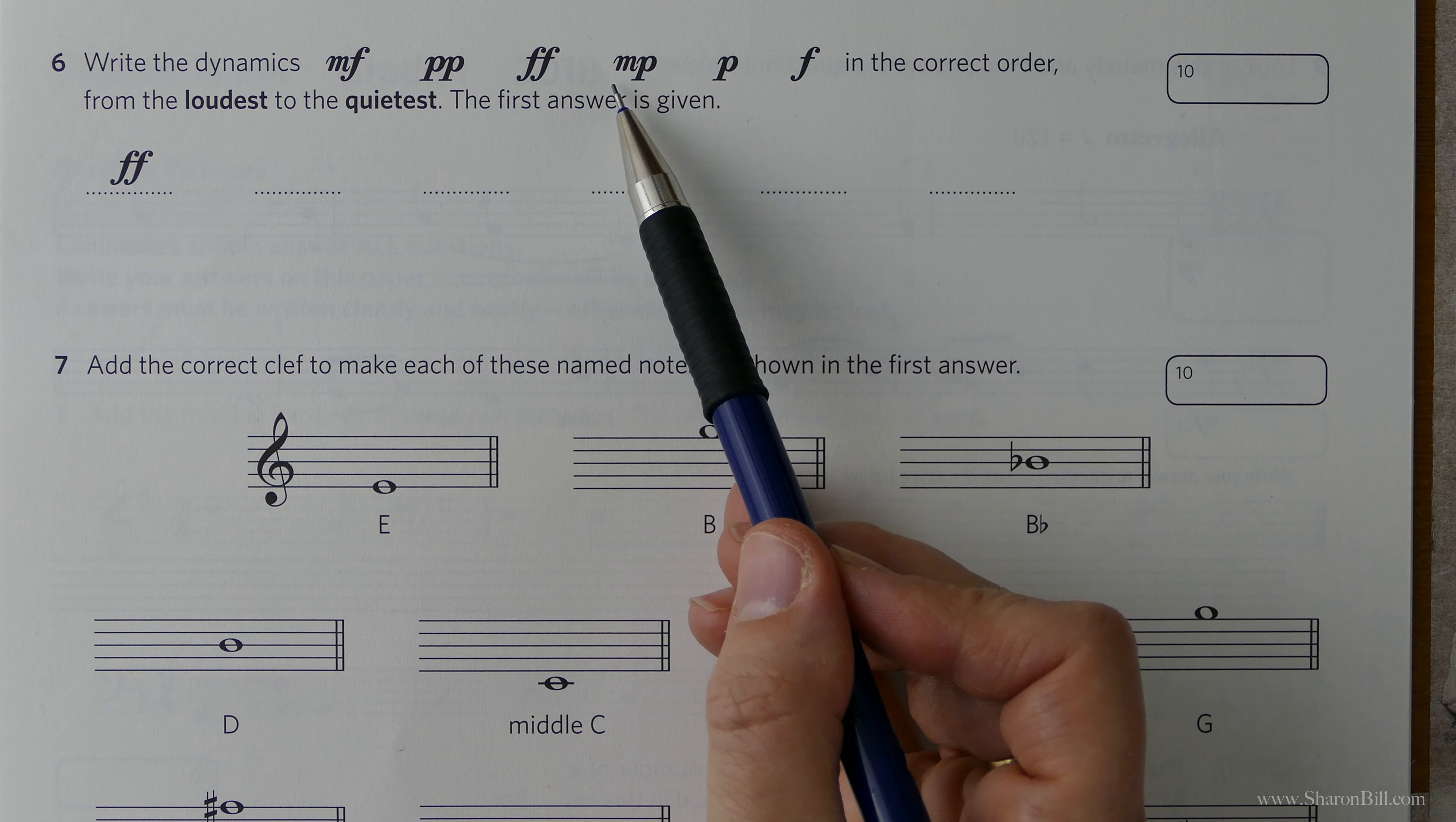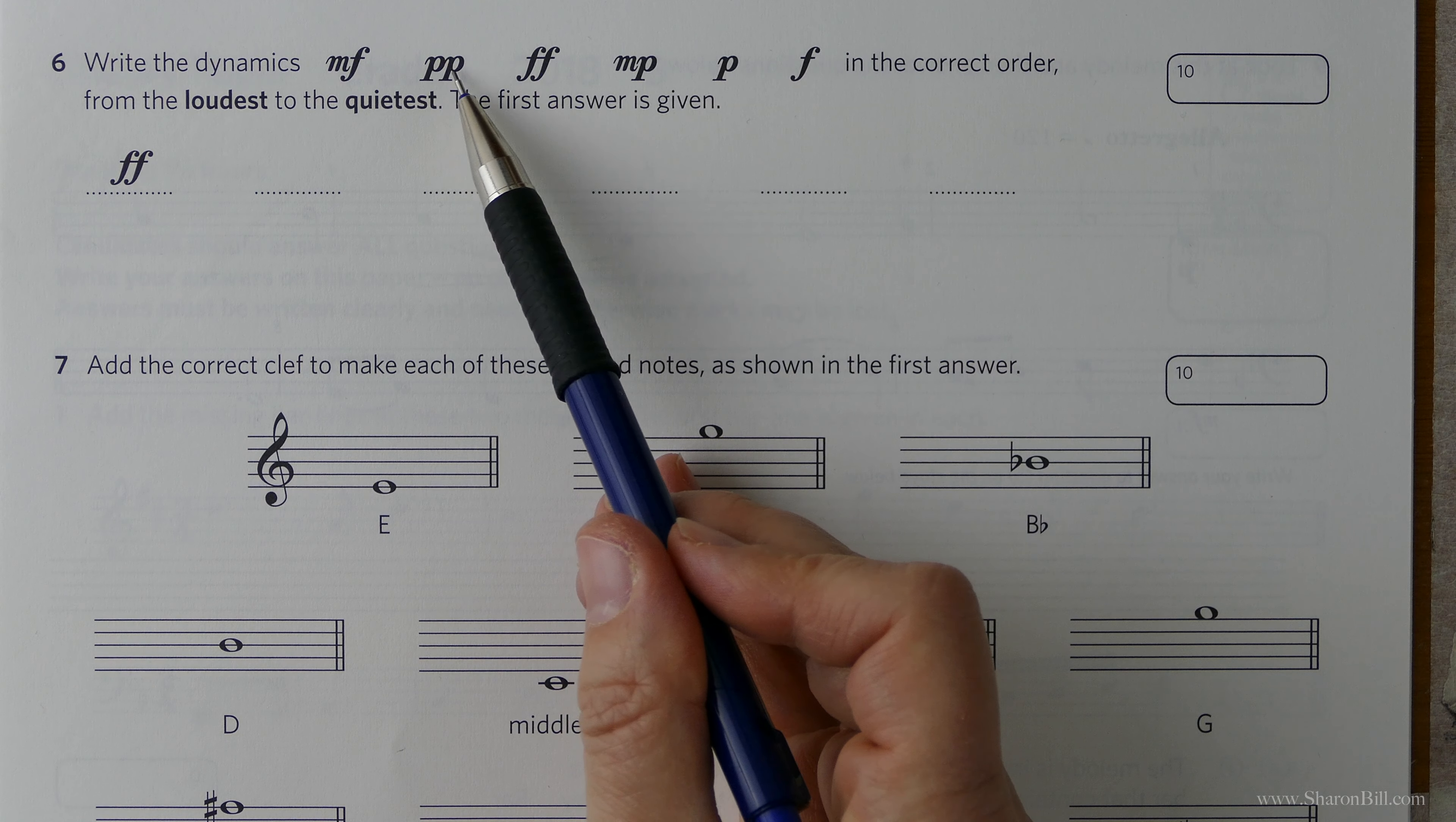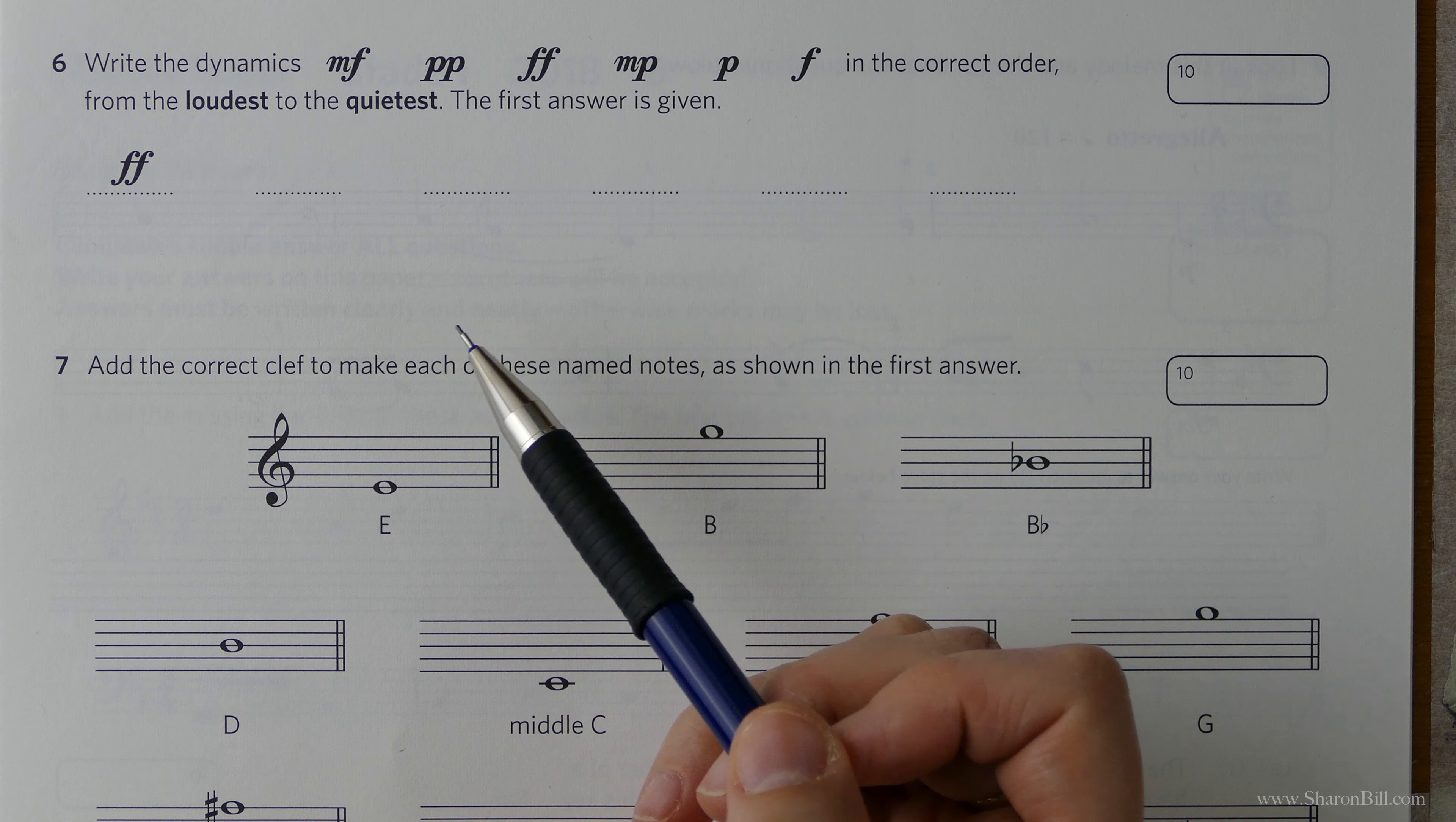M means mezzo, middle or moderately, and when we have the letter doubled up we say issimo, so pianissimo or fortissimo, and that sort of means extra. So extra loud, extra quiet.